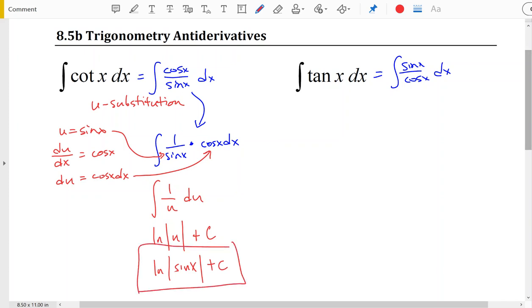All right, let's try the same thing with tangent of x. And if you haven't done tangent of x yet, pause the video and see if you can follow a similar process to do tangent of x. Okay, when we come here with tangent of x, we might be inclined to try again u is equal to sine of x. That means that du is equal to cosine of x dx, just like last time.